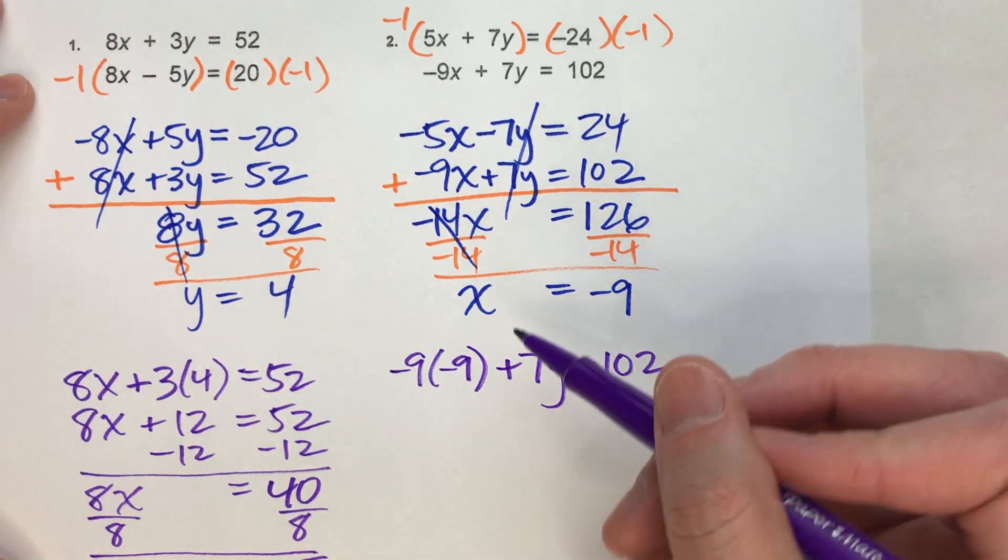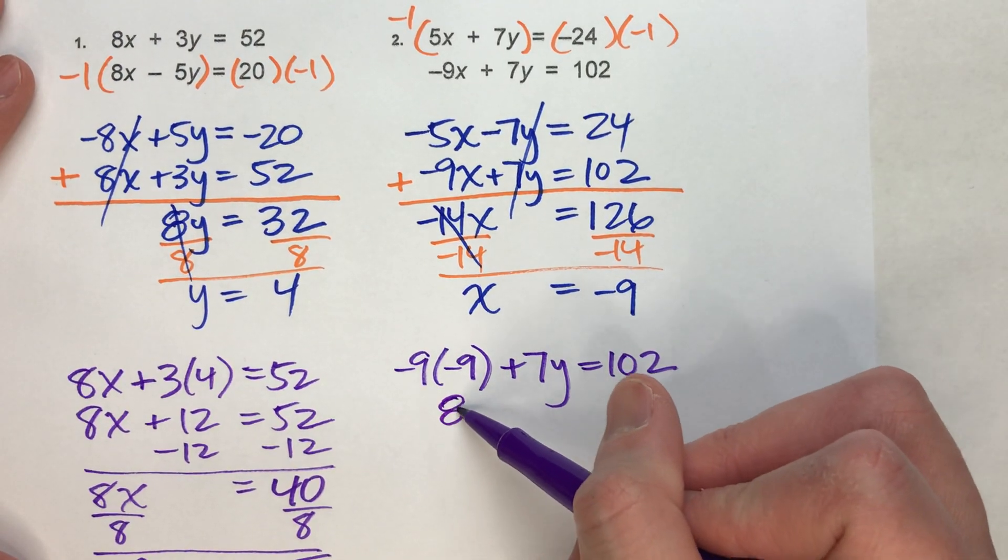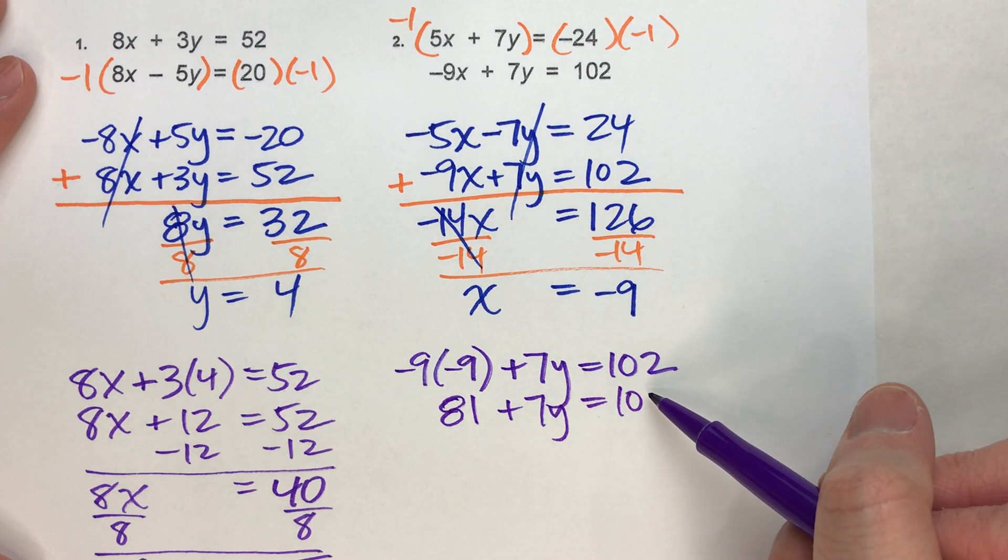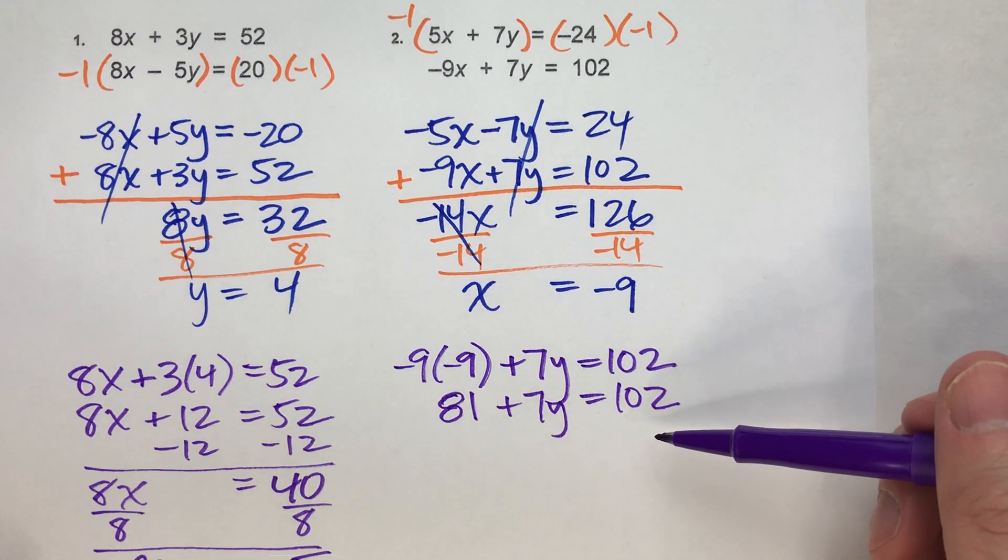And if I simplify this, negative times negative is a positive. So this is positive 81 plus 7y equals 102. Now if I solve this equation, I can figure out what y is.